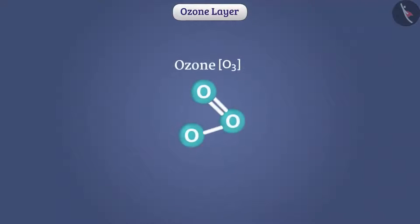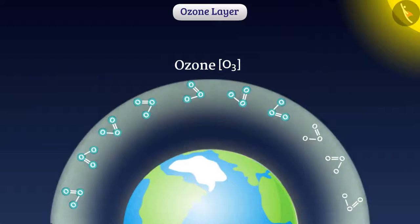One molecule of ozone, that is O3, is made up of three atoms of oxygen. Although ozone is a deadly poison, it has an important role in protecting life on earth.